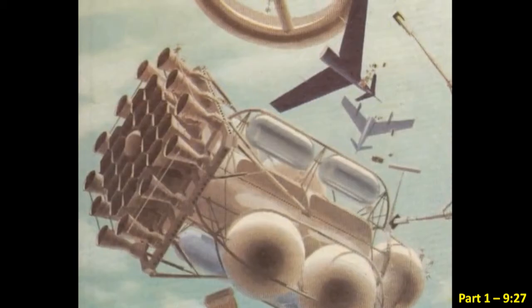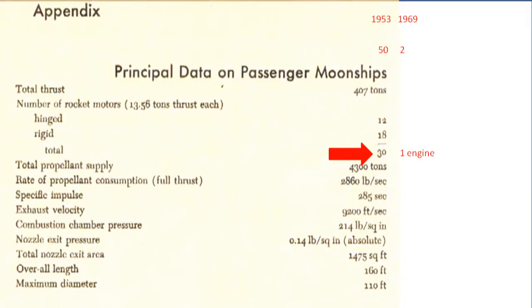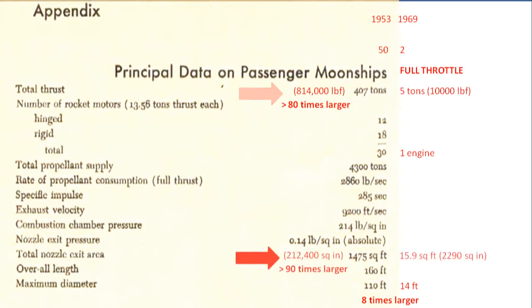There are 30 engines on von Braun's moon rocket. 30 engines! The overall diameter of his rocket is 8 times larger than the Apollo lunar module. His total thrust is over 80 times greater. His total exit area is over 90 times greater.